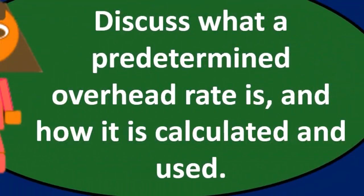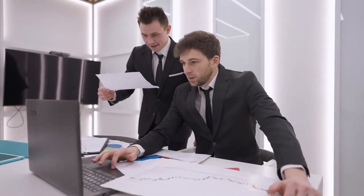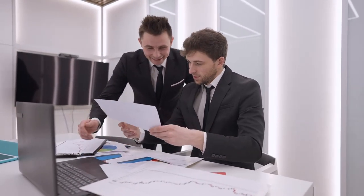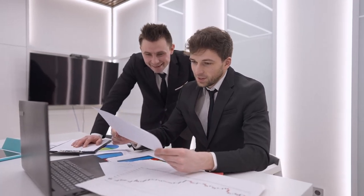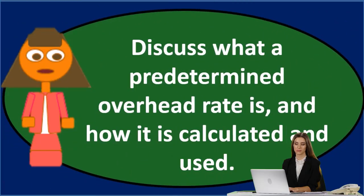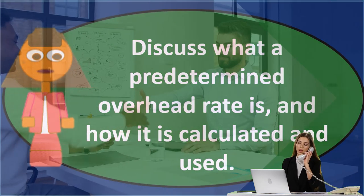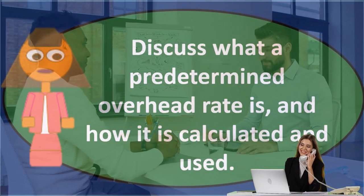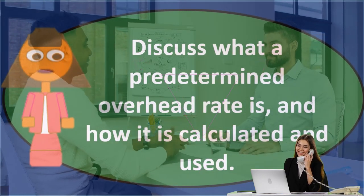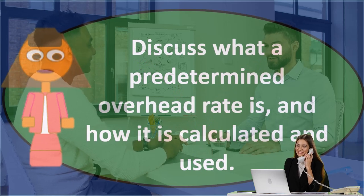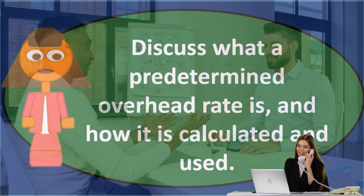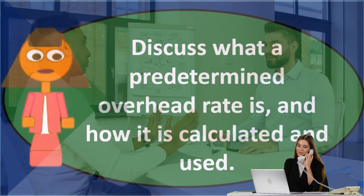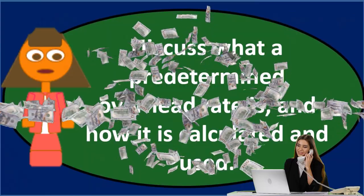The problem with overhead is we don't know where it should go — we can't apply it to a job directly. It's not direct labor, it's not a direct cost. In a job cost system, we don't know which job to apply it to. That's why we can't put it directly into work in process. We have to apply it to work in process, but not using a direct process — instead, we use some type of estimate. The predetermined overhead rate helps us estimate how much overhead should go into each job.